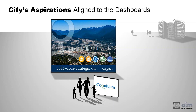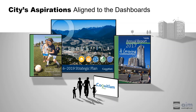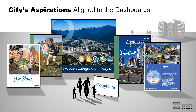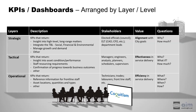One of the key design principles is the concept of alignment — that is, the line of sight between the city's aspirations contemplated in key strategic documents such as the official community plan, and the day-to-day transactions that occur within each of the city's departments. One of the city's key requirements was for the dashboard designs to reflect the varying needs of internal stakeholders, captured in three layers: strategic, tactical, and operational.